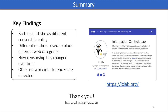As a summary, I introduced our measurement platform iCELAB and highlighted our key findings: different test lists can change our observations in censorship policy; a censor uses different methods to block different web categories; censorship has changed over time; and iCELAB can detect other network interferences. I also want to introduce our iCELAB website, where you can find recent information related to the project and interact with our data through nice visualizations. Please visit our website if you are interested. Thank you for your attention.